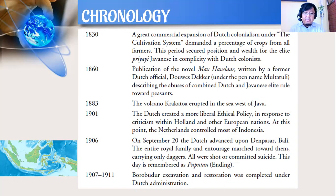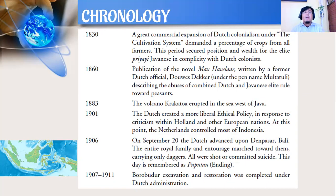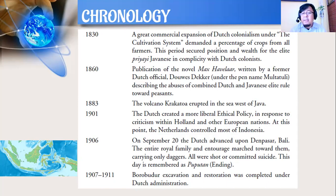In 1906, on September 20, the Dutch advanced upon Denpasar, Bali. The entire royal family and inner circle marched towards them carrying only daggers. All were shot or committed suicide. This day is remembered as Puputan — Perang Puputan — on September 20, 1906, in Bali. From 1907 to 1911, the Borobudur excavation and restoration was completed under Dutch administration, following the initial initiative of Thomas Stamford Raffles.